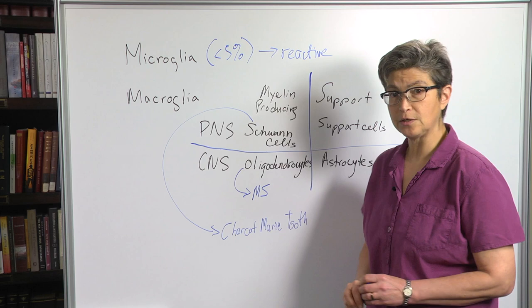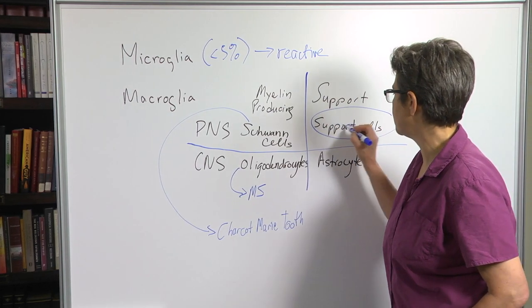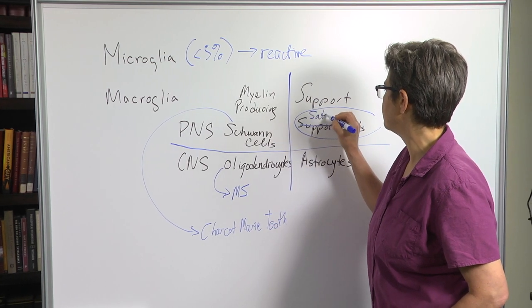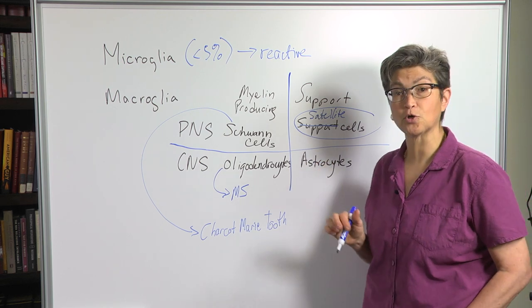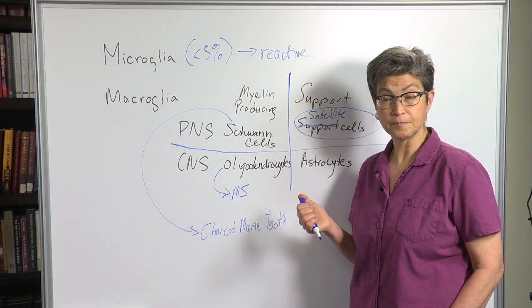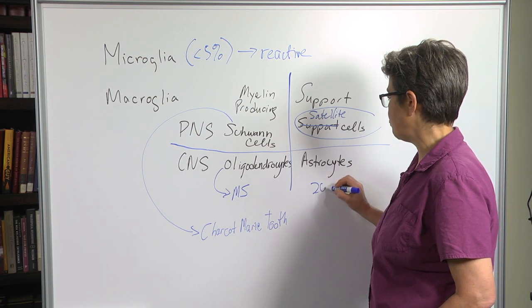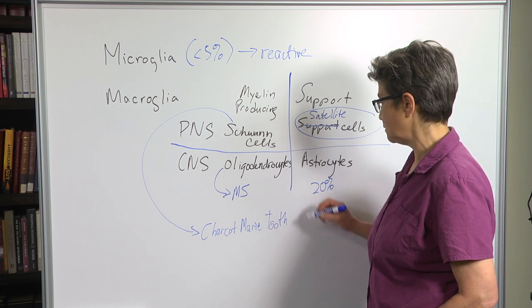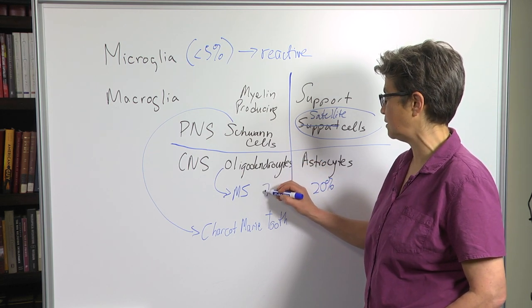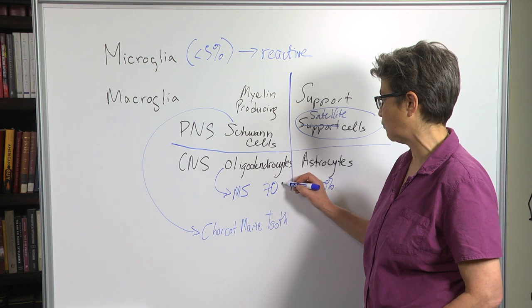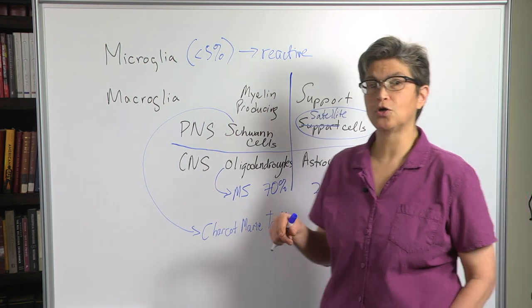For support cells, we have, in the periphery, we have satellite cells. And in the central nervous system, they're astrocytes. Interestingly enough, astrocytes account for about 20% of the central glia population, whereas these oligodendrocytes account for about 70%.